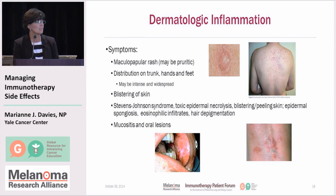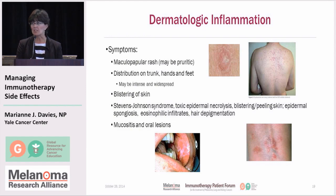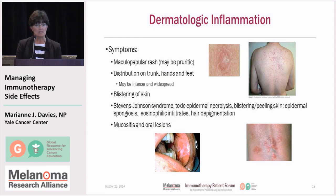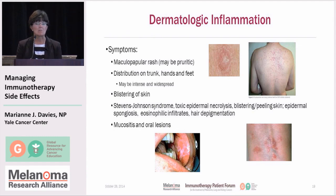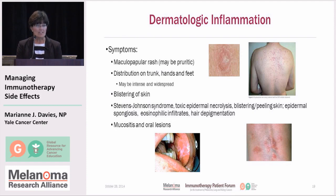Dermatologic inflammation we are noticing more frequently, and typically these are grade one and two — very small changes in the skin. You may see small patches, small discolorations of the skin. Occasionally patients develop rashes that may start on the trunk and become more diffuse. They may be pruritic, meaning that they're itchy.